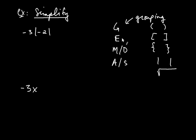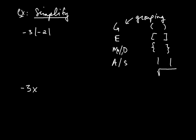As you make your way down the list: E stands for exponents; M and D are on the same level — multiplication and division from left to right; and A and S stand for addition and subtraction, again on the same level from left to right. Looking at this problem, what operations are involved? There's multiplication, but there's also absolute value. Absolute value falls under G, and G comes much earlier than M. So we do the absolute value first.